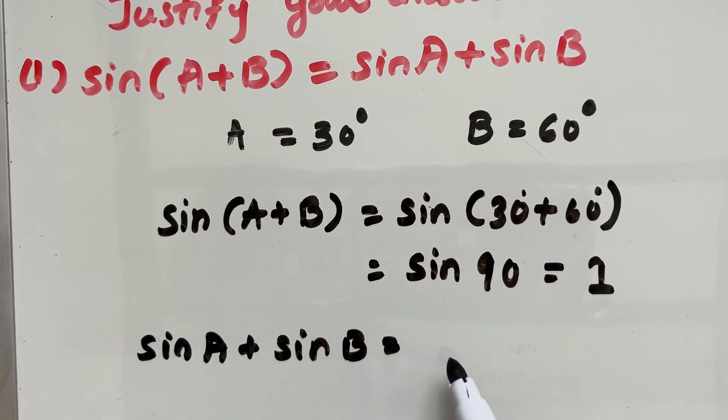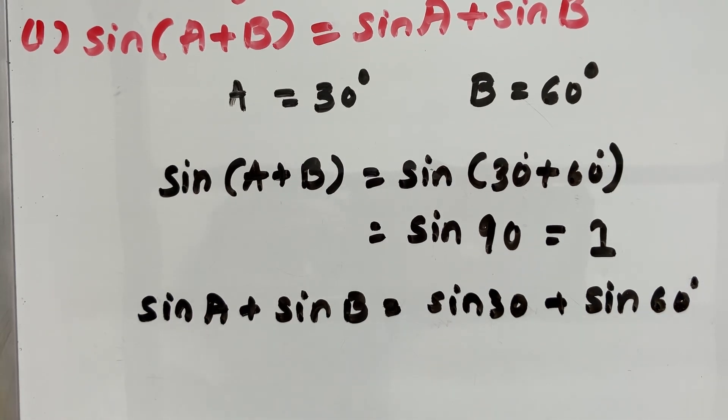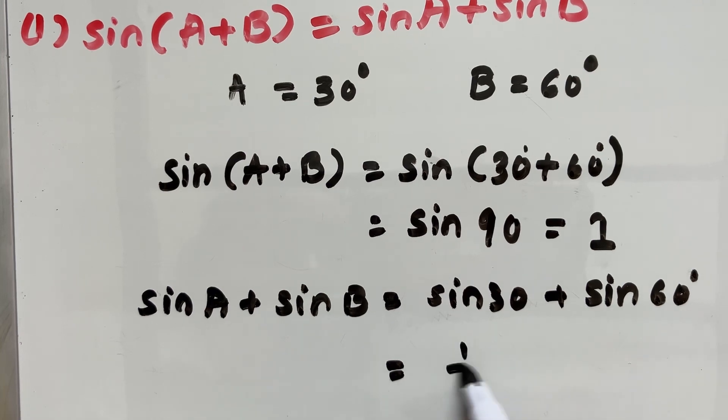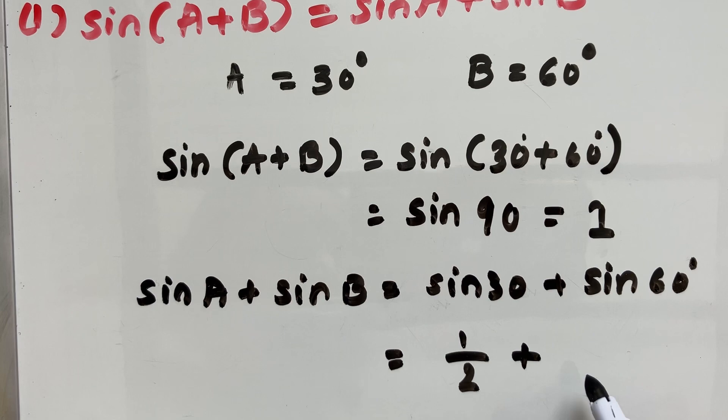Sine A means sine 30 degree. Sine 30 degree plus sine B is sine 60 degree. Sine 30 plus sine 60 degree. Sine 30 is nothing but 1 half, 1 over 2. Plus sine 60 degree is nothing but root 3 over 2.